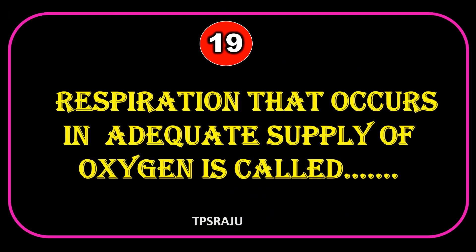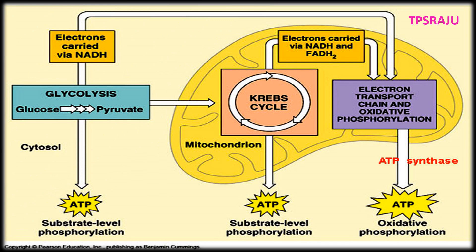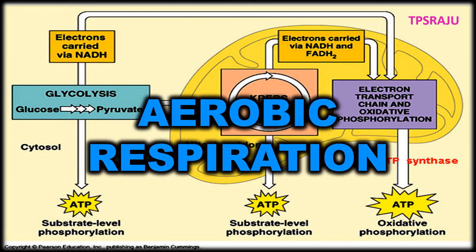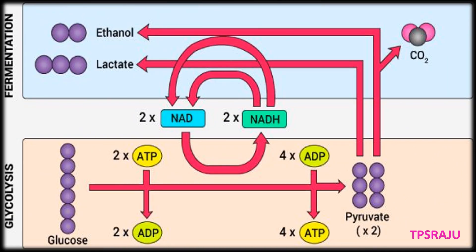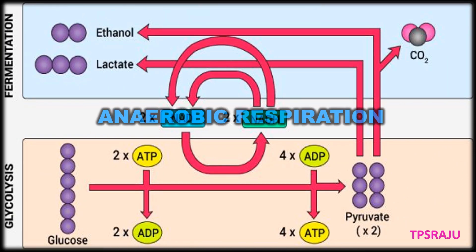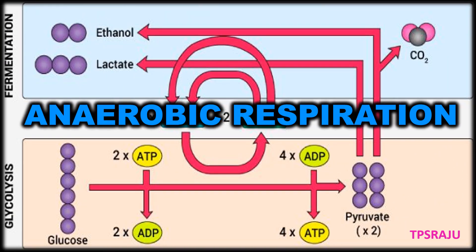Respiration that occurs with an adequate supply of oxygen is called aerobic respiration. Respiration that occurs with an inadequate supply of oxygen is called anaerobic respiration.